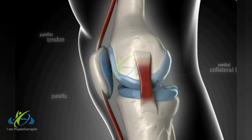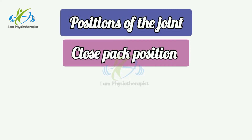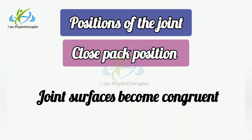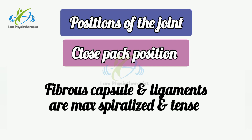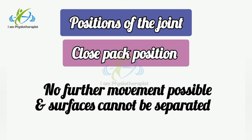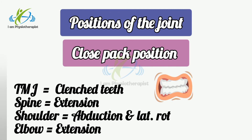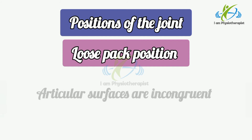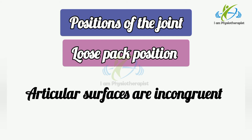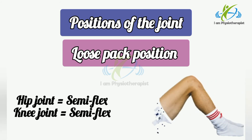Bones, ligaments, and muscles play an important role in maintaining the stability of synovial joints. Close packed position: when the joint surfaces become completely congruent, their area of contact is maximal and they are tightly compressed. In this position, the fibrous capsule and ligaments are maximally tightened, no further movement is possible, and surfaces cannot be separated by disruptive forces. For example, close pack position of the temporomandibular joint is clenched teeth; extension at spine; abduction and lateral rotation at shoulder; and close pack position of elbow is extension. Loose pack position: the position in which articular surfaces are incongruent. The joint space is freely mobile in this position. For example, loose pack position of hip and knee joint is semi-flexion.